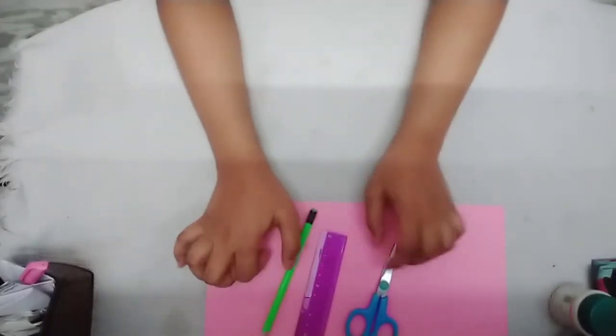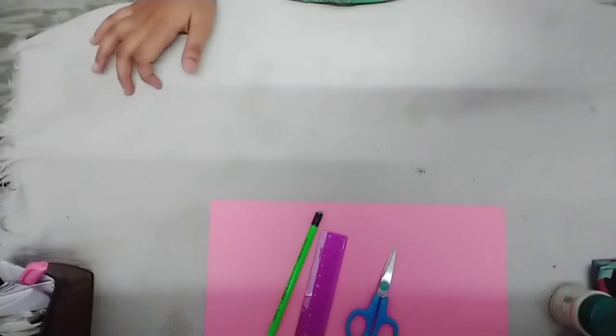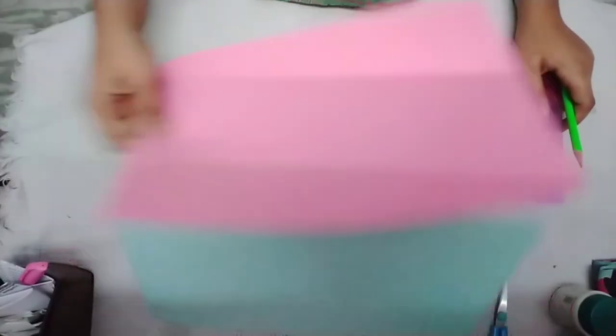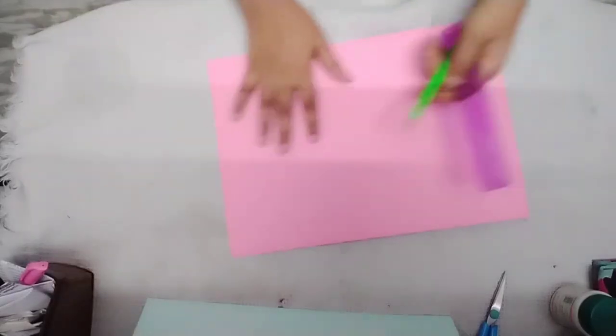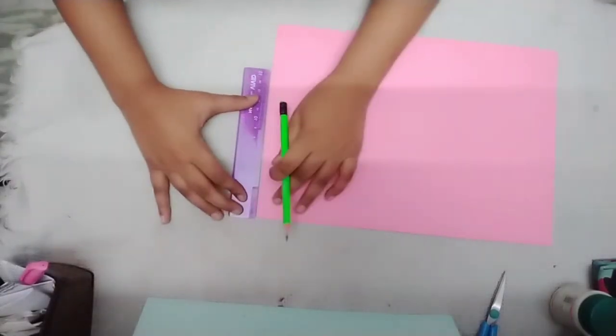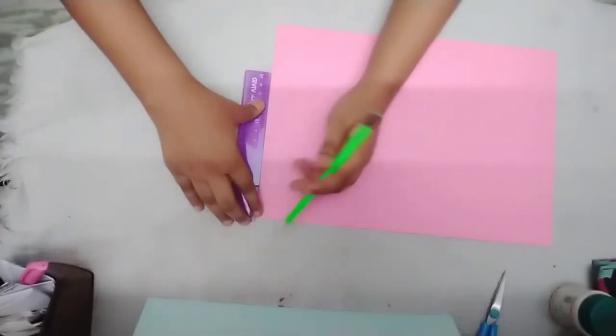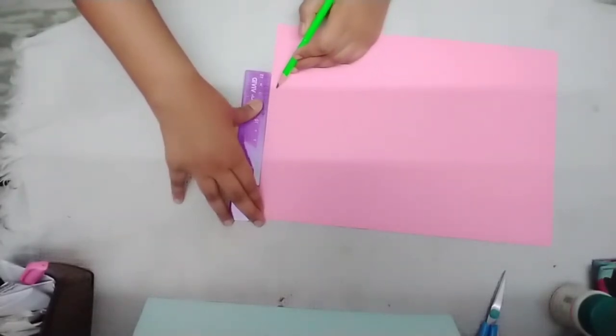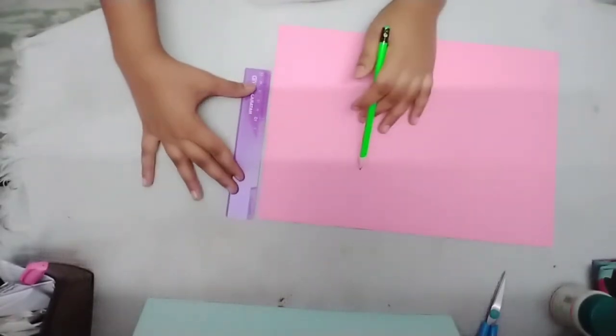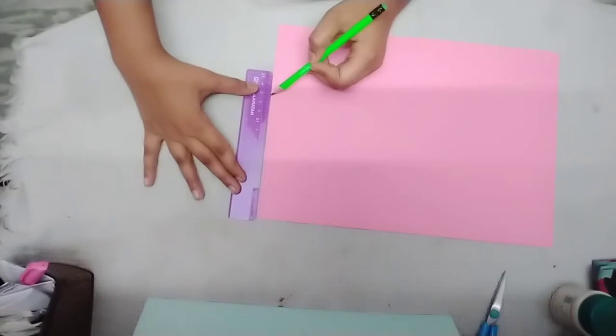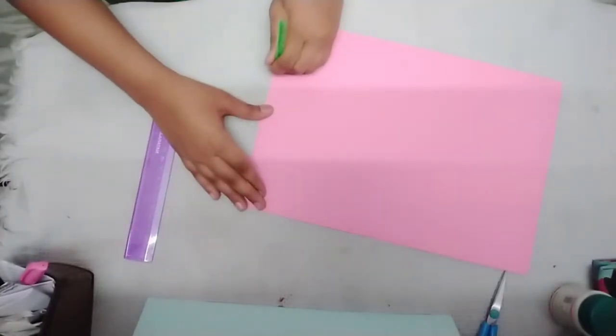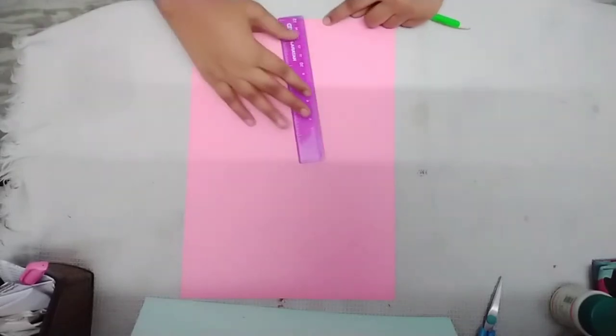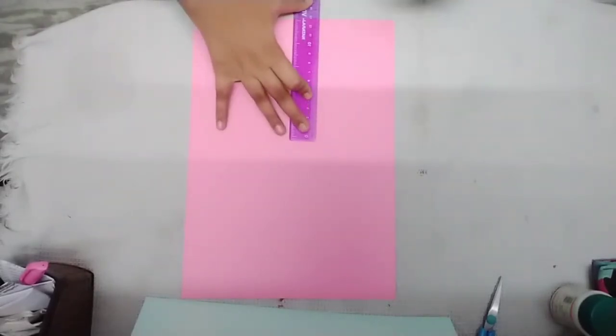First we have to mark how many centimeters we will need for our book. Here's zero. I changed my idea, so I have taken zero to thirteen centimeters. The upper marking is correct. Now measure 13 from this marking to zero.